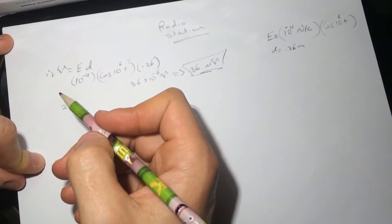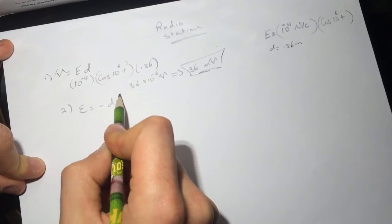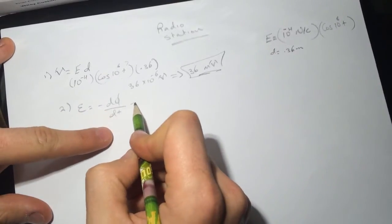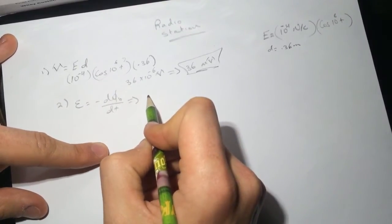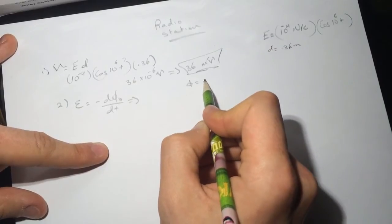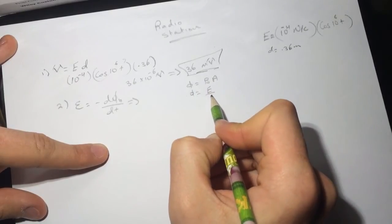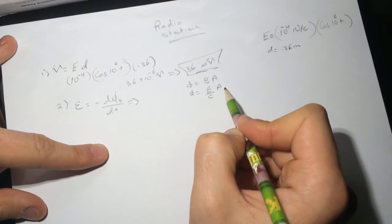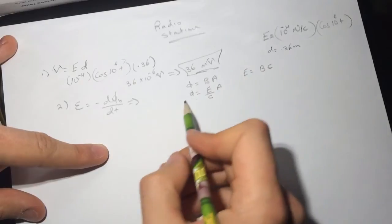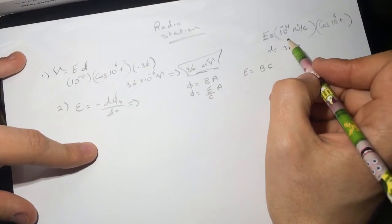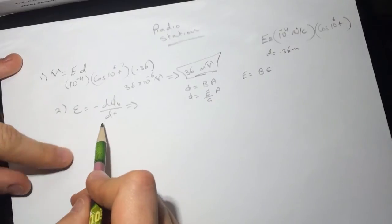Question number two is asking what is the maximum voltage that can be induced in a loop of radius 19 cm. So EMF equals minus the change in flux over change in time. The magnetic flux here is B times A, and B equals E over c. Remember the formula E equals Bc, so the E here is changing with time, but A and c are the same, so we can pull them out.